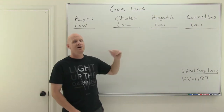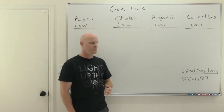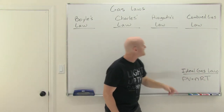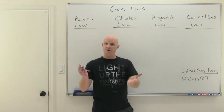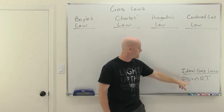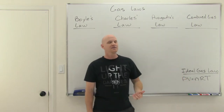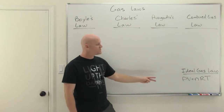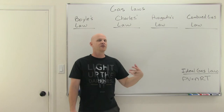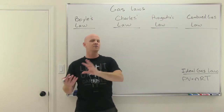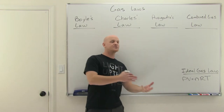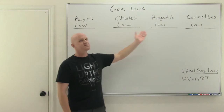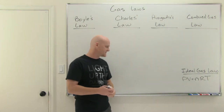Each of these three laws compares volume to one of the other three variables. Boyle compared volume to pressure. Charles compared volume to temperature. And Avogadro, who's famous for his number — a mole, 6.02 times 10 to the 23rd — conveniently compared volume to the number of moles of gas. If you're only comparing two variables from this equation, you want to see how one variable changes when the other changes, which implies you have to hold the other two variables constant.